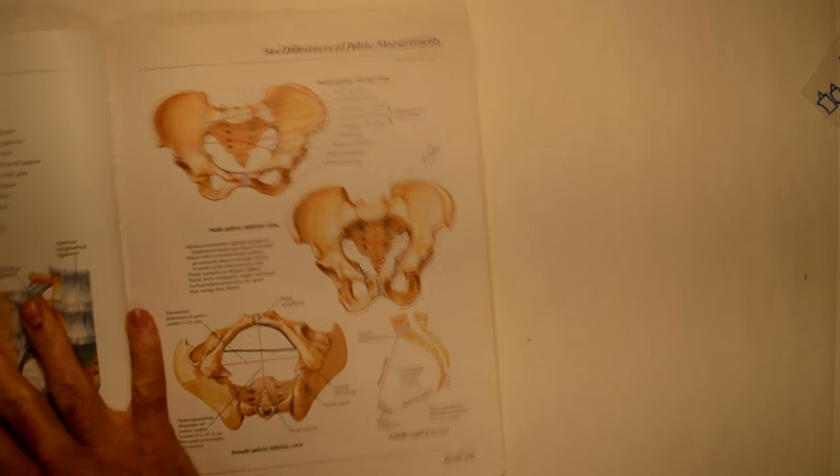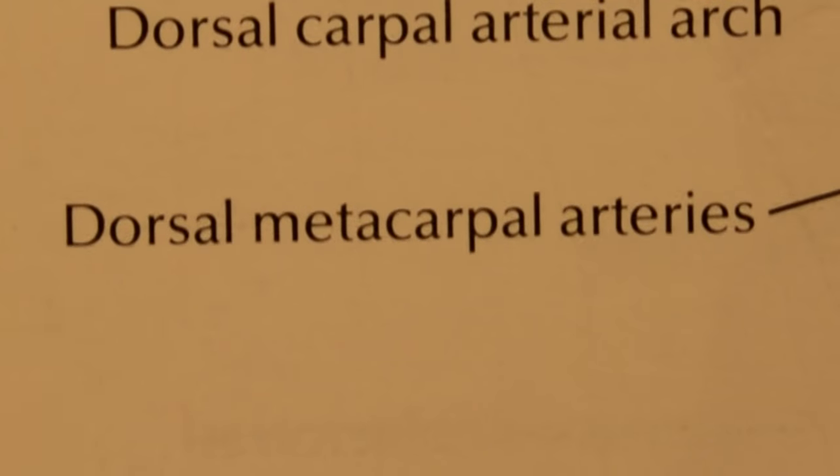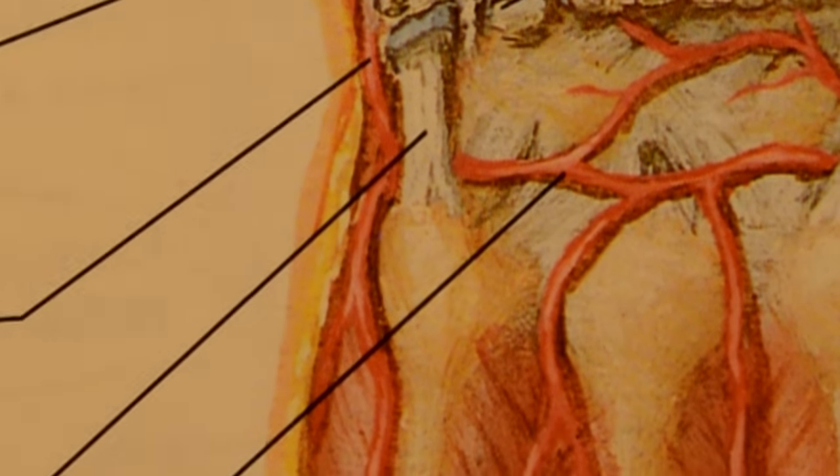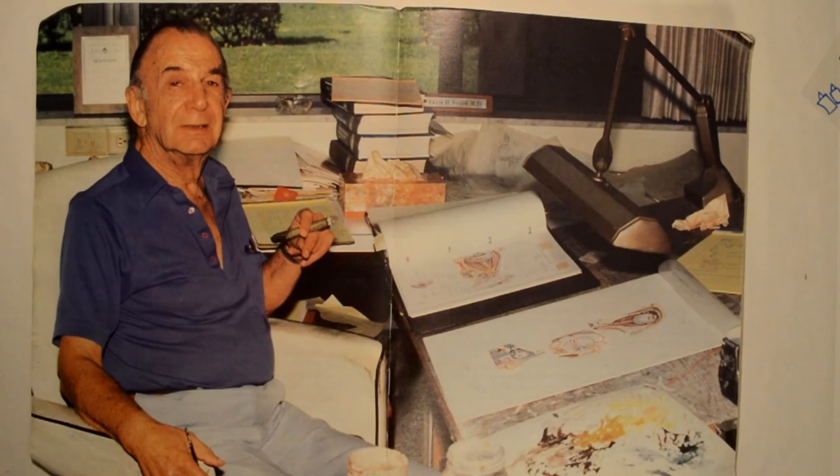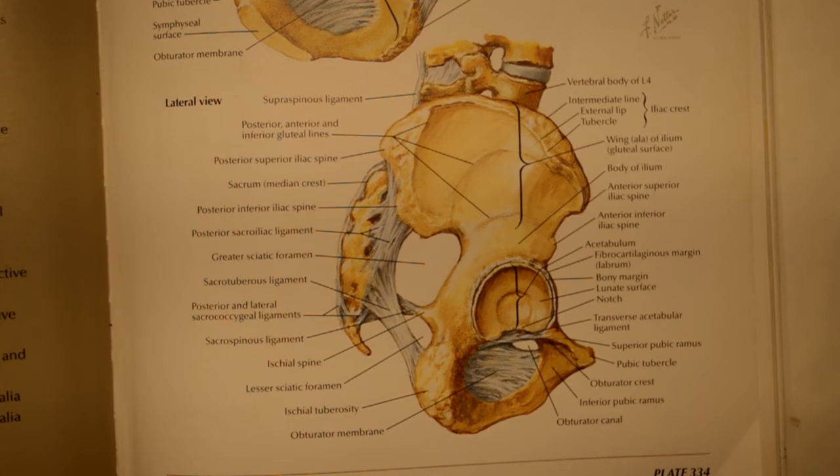Every twist and turn of a peripheral nerve, every recurrent artery, every random insertion of a ligament is documented here. It's named after the guy who drew the whole thing. Take a look at the pelvis. Imagine trying to draw a 3D representation of this.